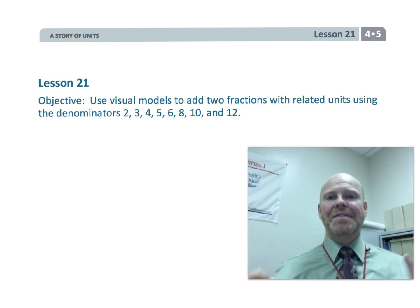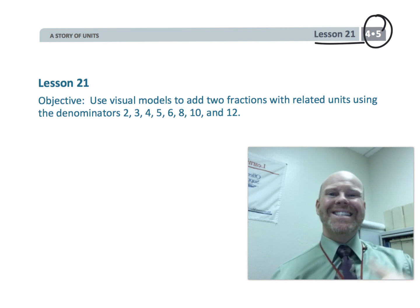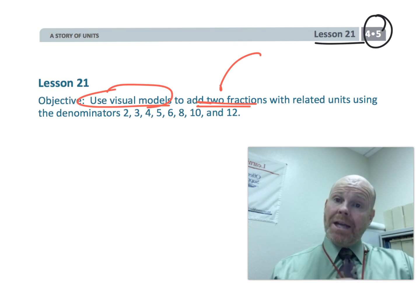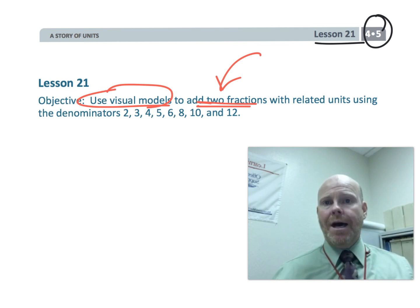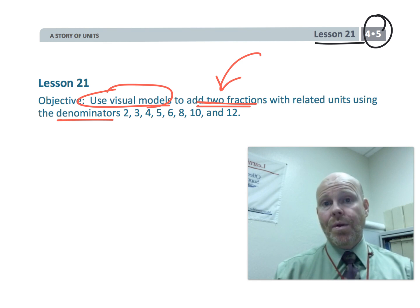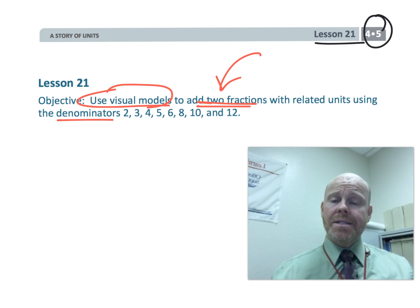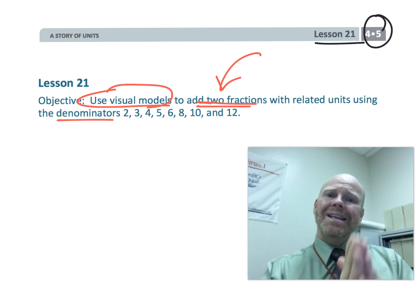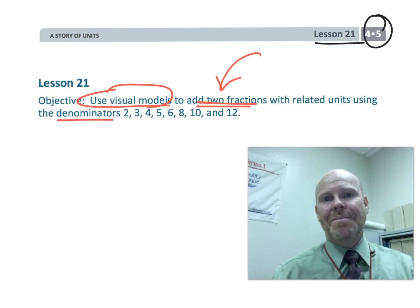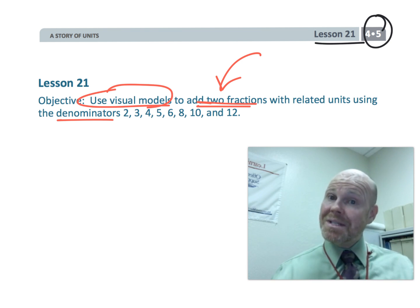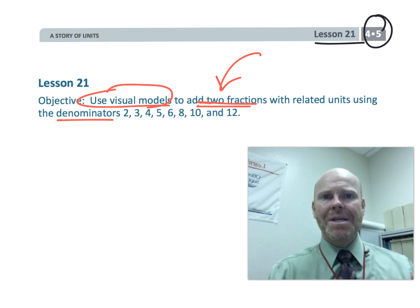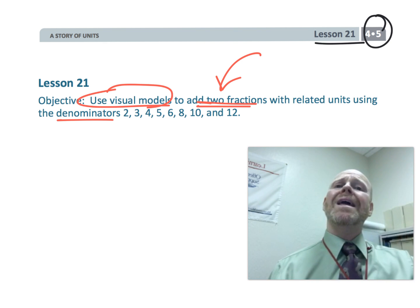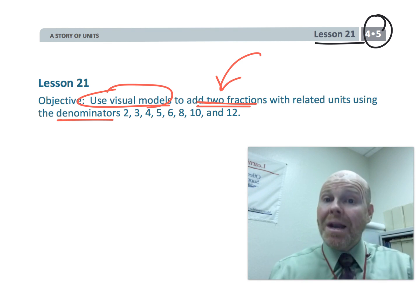This is fourth grade module 5 lesson 21. In this lesson, students are going to continue using visual models to add two fractions by finding like denominators or common denominators. We're not quite at the standard algorithm yet, but we are getting closer. In this lesson, we're removing some scaffolding that students have been using in previous lessons as we get incrementally closer to that standard algorithm. Parents and teachers, try to resist jumping straight to that standard algorithm because these lessons are really designed to develop understanding for students so that when we do teach them the algorithm, they'll be ready for it.